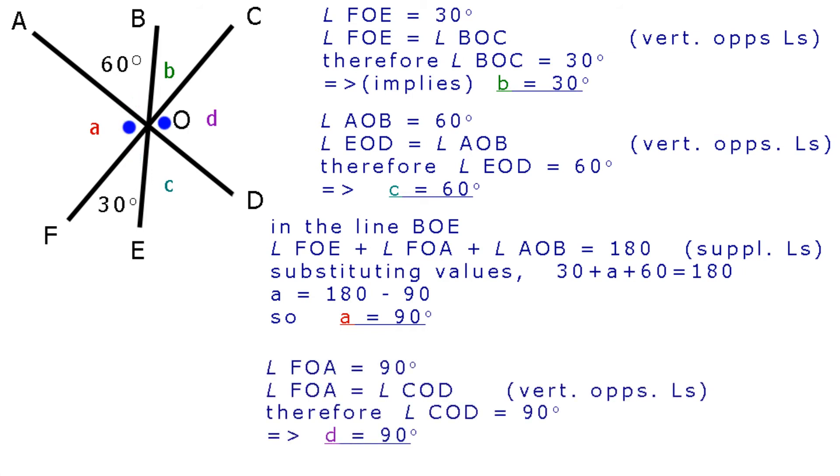Angle FOA equals 90 degrees. Angle FOA equals angle COD, vertically opposite angles. Therefore angle COD equals 90 degrees, which implies that D is 90 degrees.